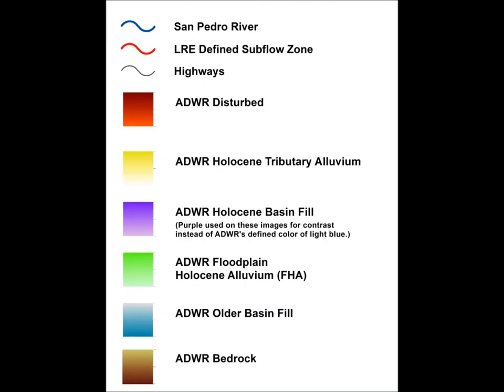Each of the ADWR generalized geologic units is color coded in the three animations. The colors assigned follow the scheme ADWR adopted in its 2011 report, with one exception. We changed the color of the Holocene basin fill from light blue to purple, so that it could be more easily differentiated from the older basin fill. Briefly, the color coding is as follows: Bedrock, brown. Older basin fill, light blue. Tributary Holocene alluvium, yellow. Holocene basin fill, purple. Floodplain Holocene alluvium, green. Disturbed areas, red.